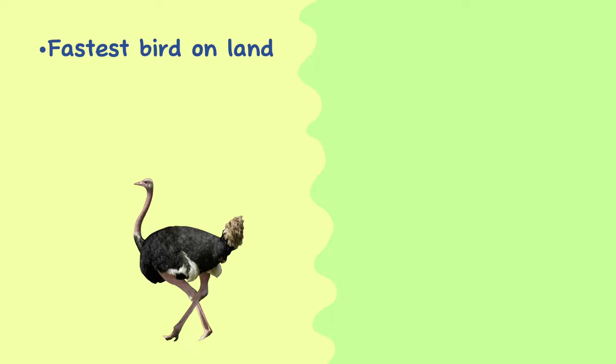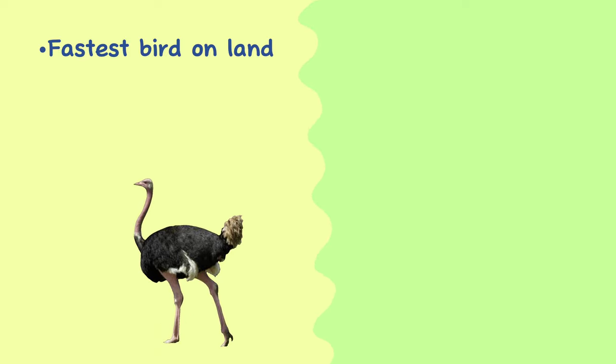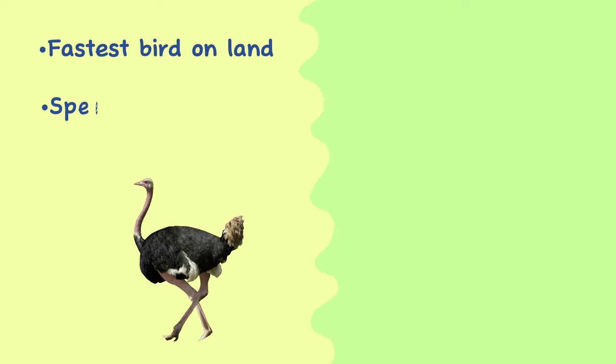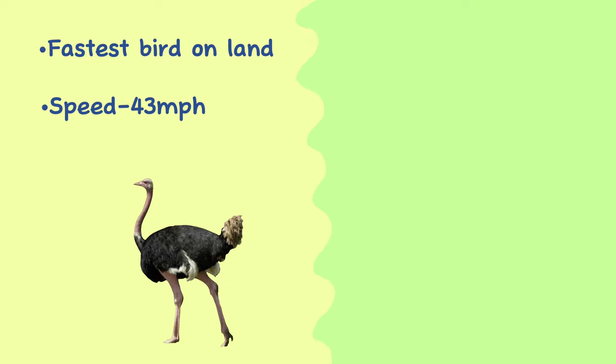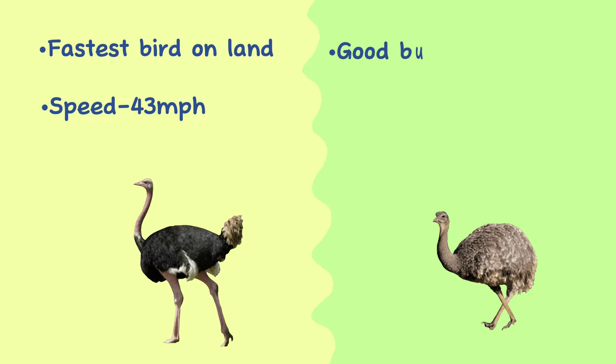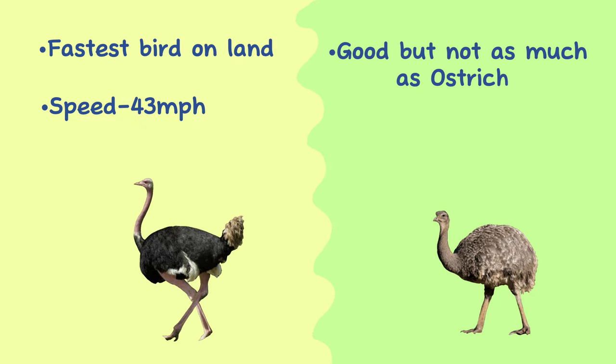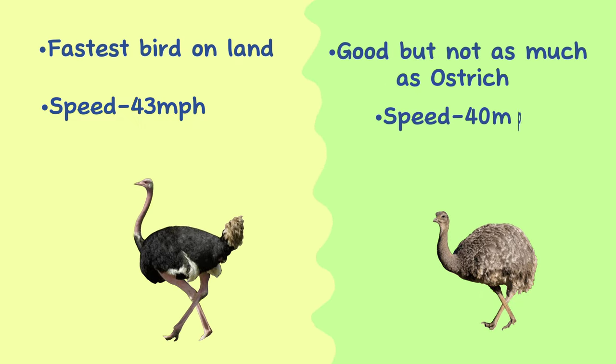Speed. The ostrich is the fastest bird on land, as well as the fastest running animal on two legs. The highest reliably measured running speed for ostriches is 43 miles per hour. Rheas are also very fast runners and are able to reach speeds up to 40 miles per hour.